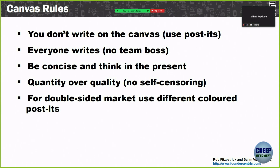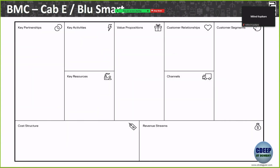Then you start prioritizing quality and certain features — that's how they come up with company names. Initially quantity over quality, no self-censoring. For double-sided markets — supplier versus customer — you can use different colored post-its.